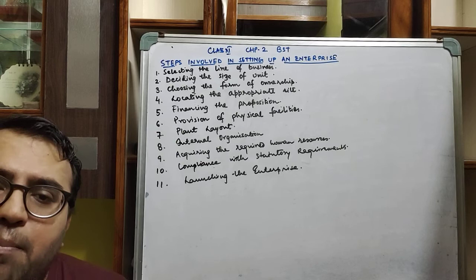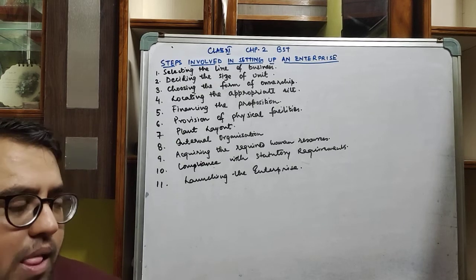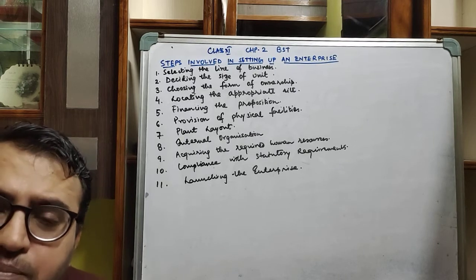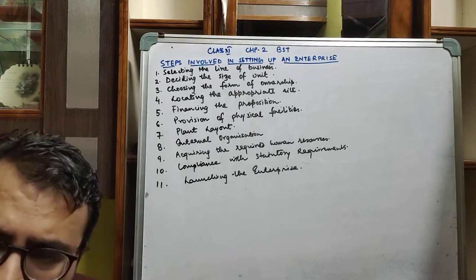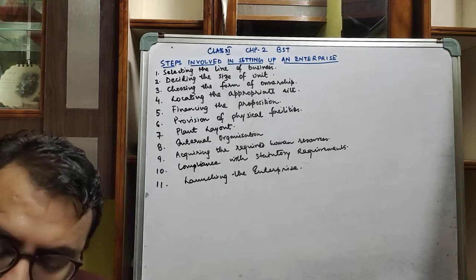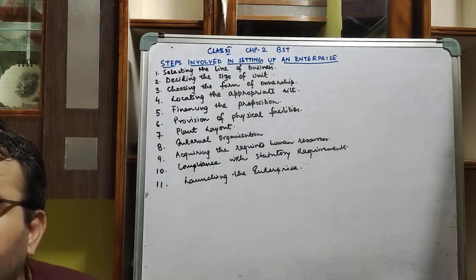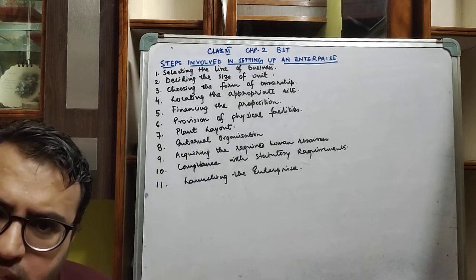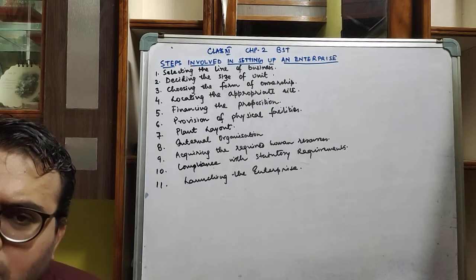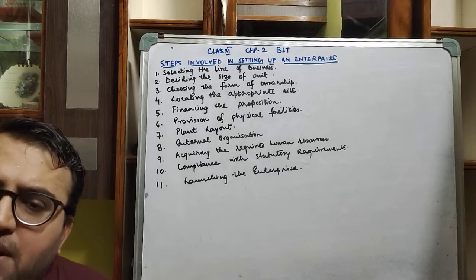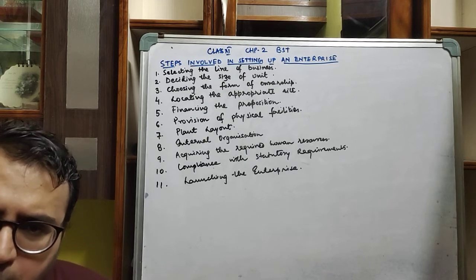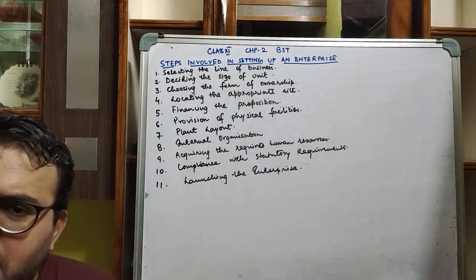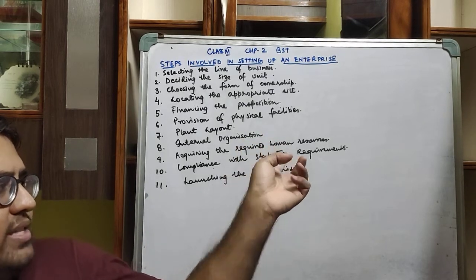Next is plant layout — how the organization or enterprise should be laid out, meaning how the plant should be arranged and how it should look. After that is internal organization, which refers to the persons associated with and working within the organization. The organizational structure comprises a hierarchy with the board of directors, owner, chairman, and CEOs at the top — and there are three levels: top, middle, and bottom.